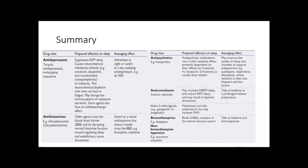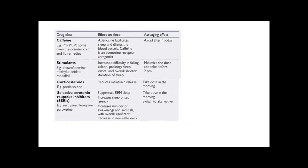Summary of preferred timing of administration. Antidepressants: administer at night or switch to a less sedating antidepressant. Antihistamines: older agents cross the blood-brain barrier, so switch to a newer antihistamine that doesn't readily cross it. Antipsychotics: drowsiness is usually dose-related; it may improve quality of sleep, but consider an atypical antipsychotic such as risperidone or olanzapine where sedation is often less frequent and less severe. Anticonvulsants: results in daytime drowsiness, so take at bedtime as a long-release preparation. Benzodiazepines: should be taken at bedtime and exposure limited. Caffeine: avoid after midday. Stimulants: minimize the dose after 2 pm. Corticosteroids: take the dose in the morning. SSRIs: take the dose in the morning or switch to an alternative.